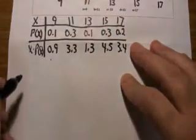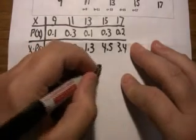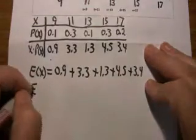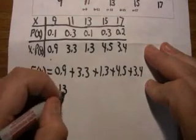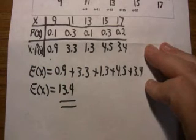And by definition, the expected value of a random variable is the sum of the products on the last line. 0.9 plus 3.3 plus 1.3 plus 4.5 plus 3.4. And if you use the calculator to do that sum, you'll end up with the expected value of 13.4. So the expected value of that probability function that was given in that graph is 13.4.